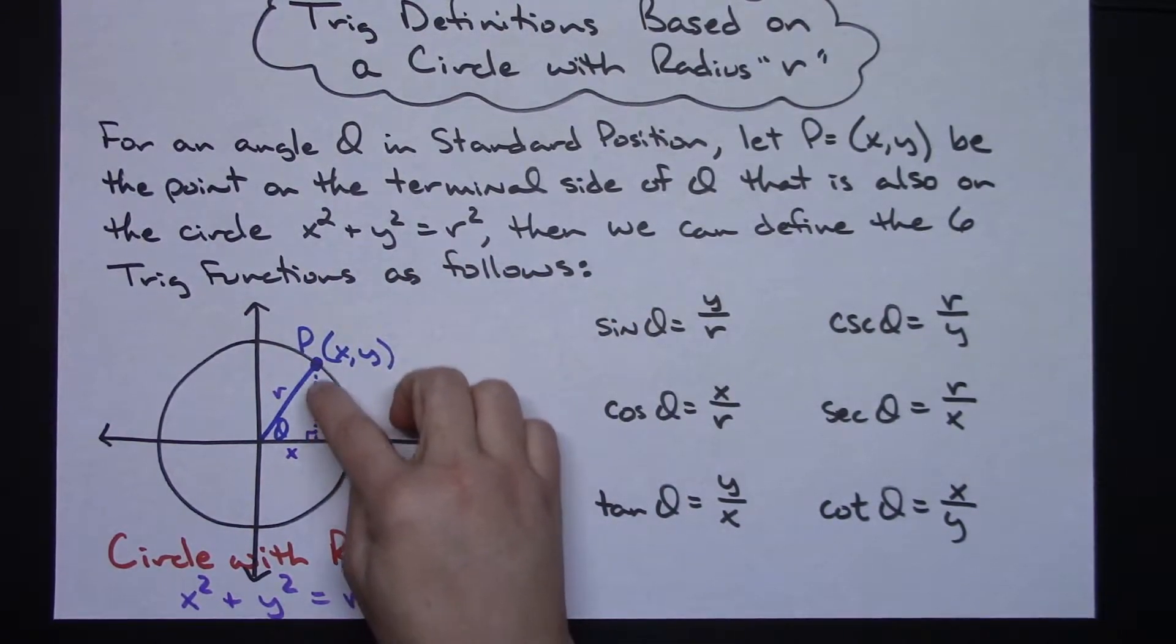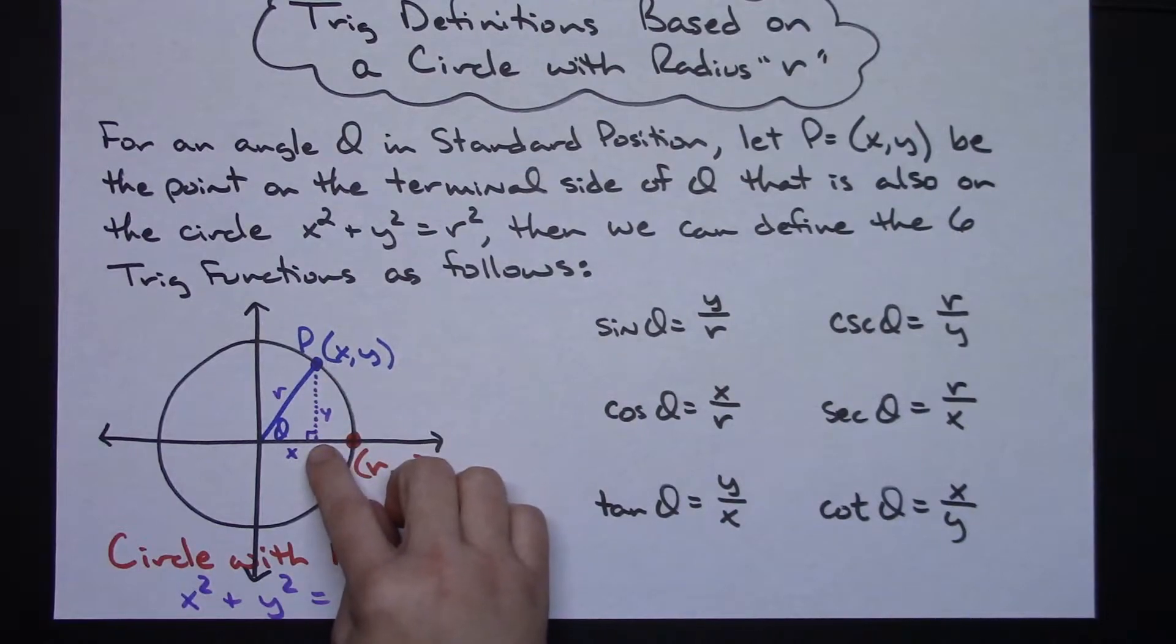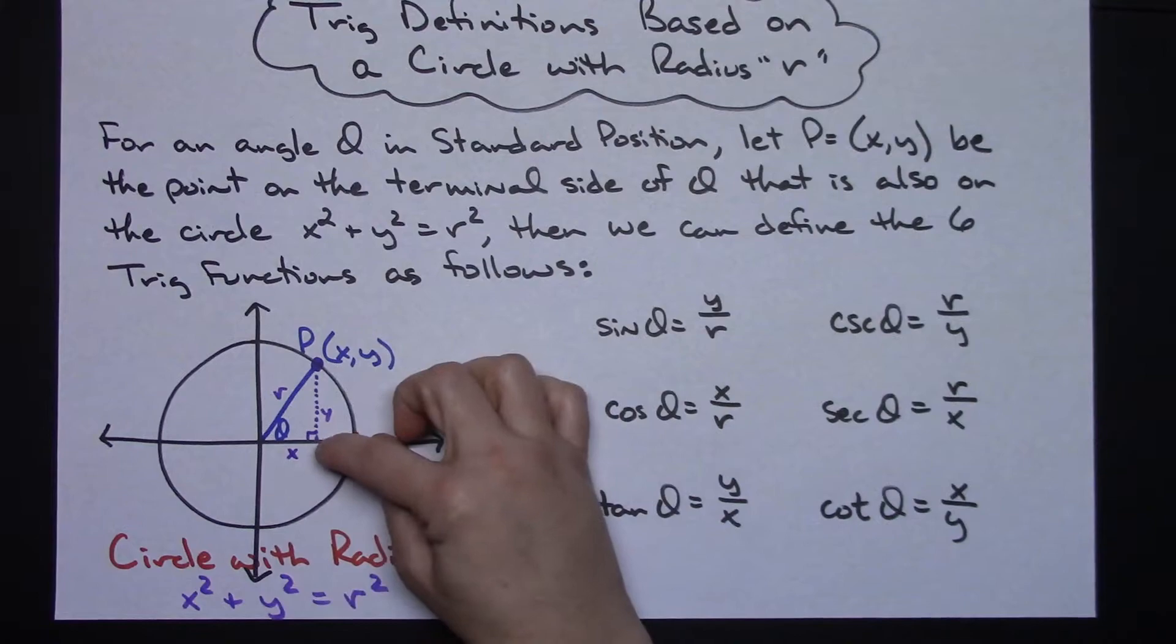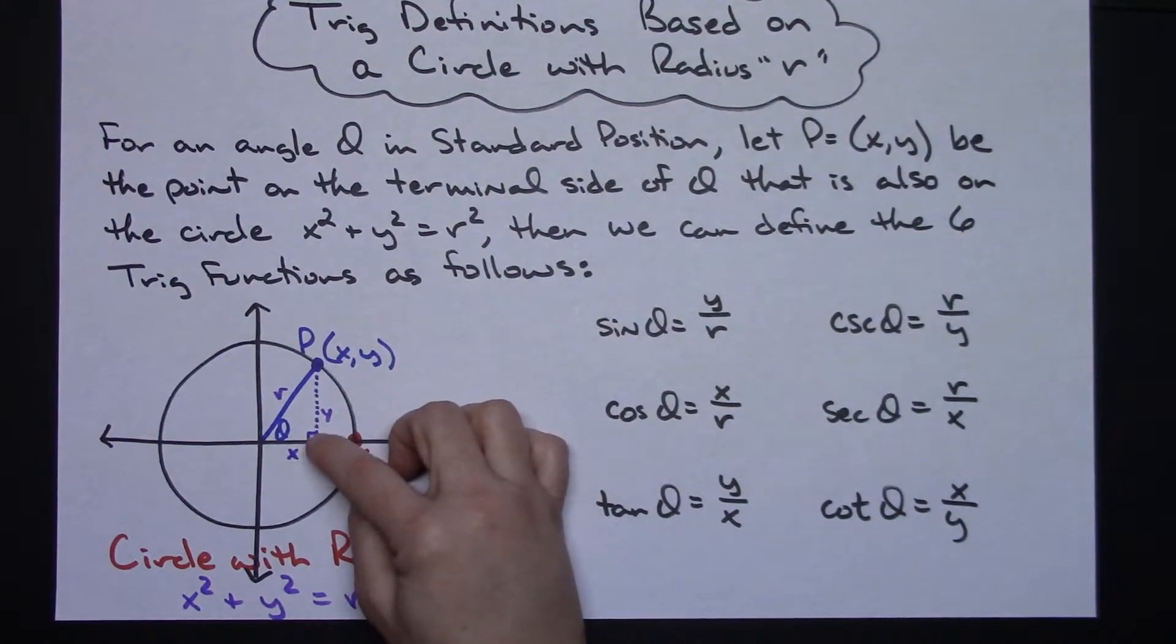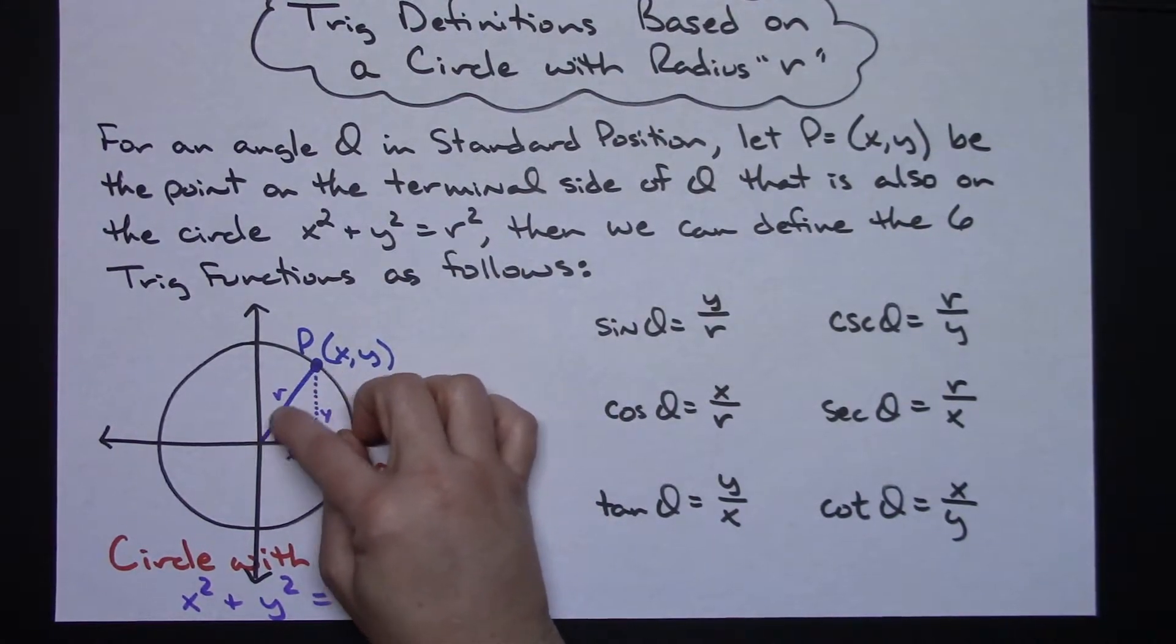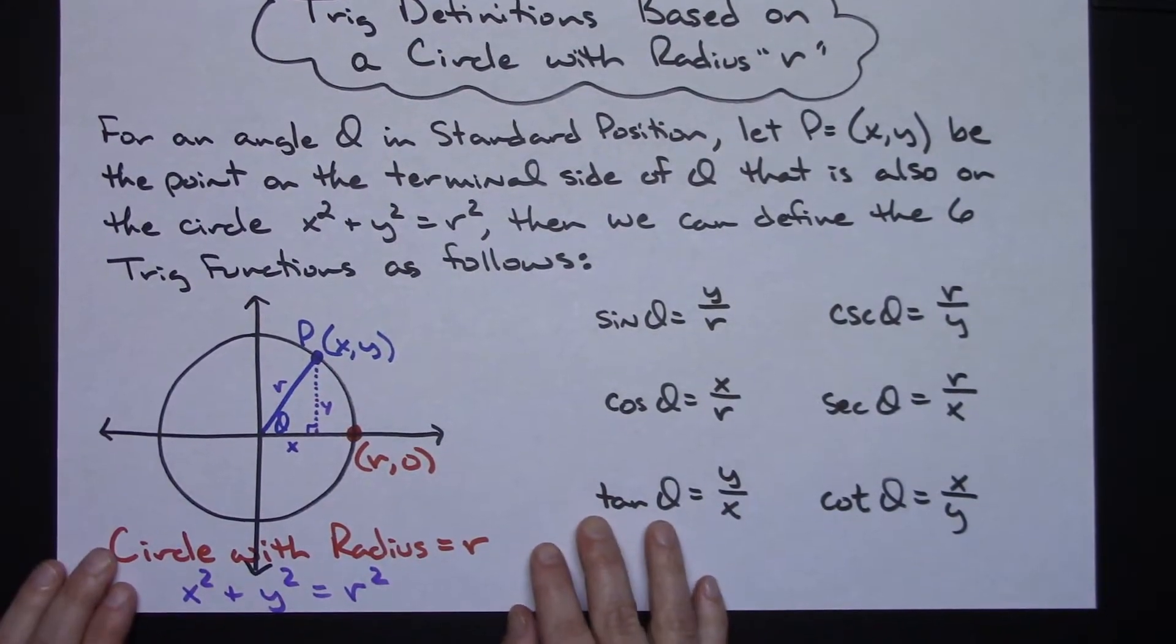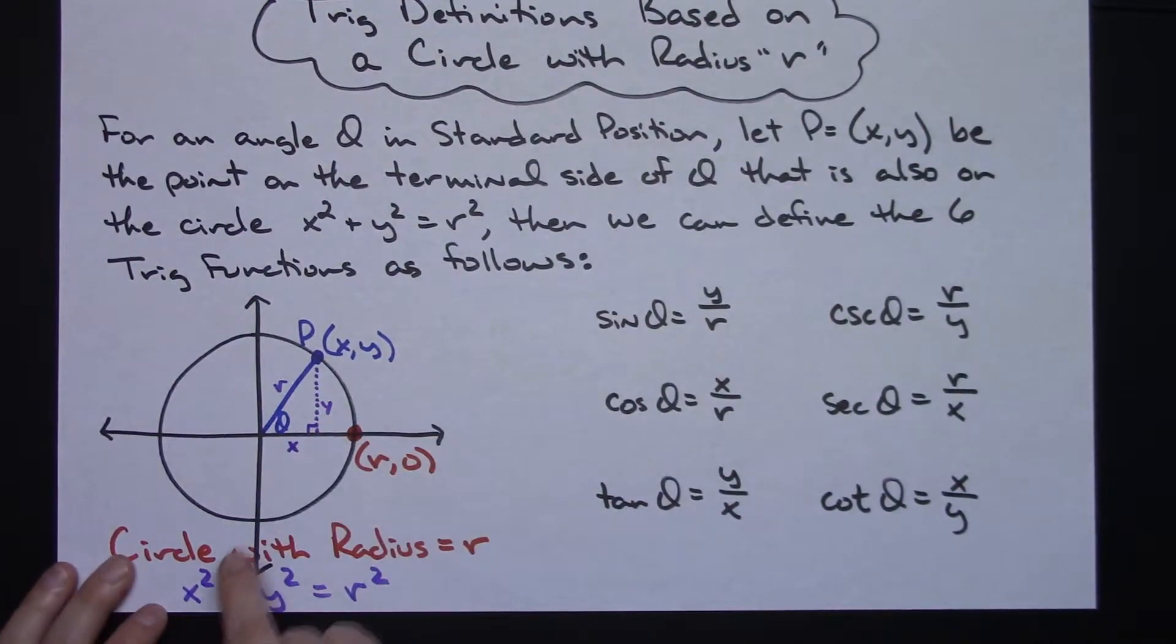If I drop a perpendicular down from that point down to the x-axis here, well then that means this distance is x, this distance is y, I've got a right triangle going on here, and I have a radius of r right there to make that Pythagorean triple right there. So x squared plus y squared equals r squared.